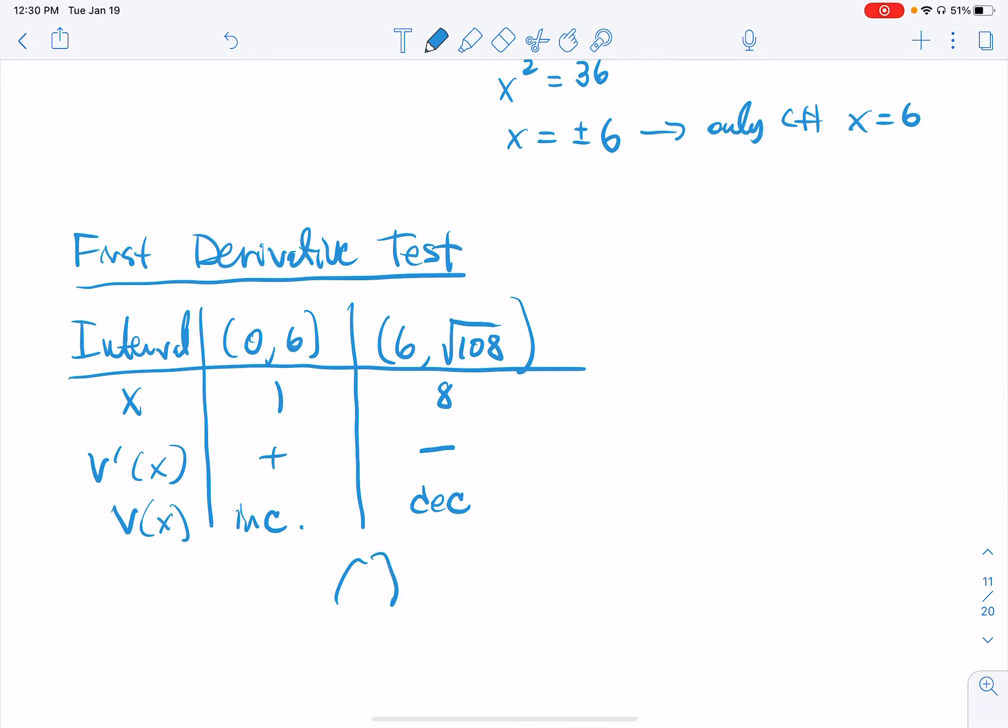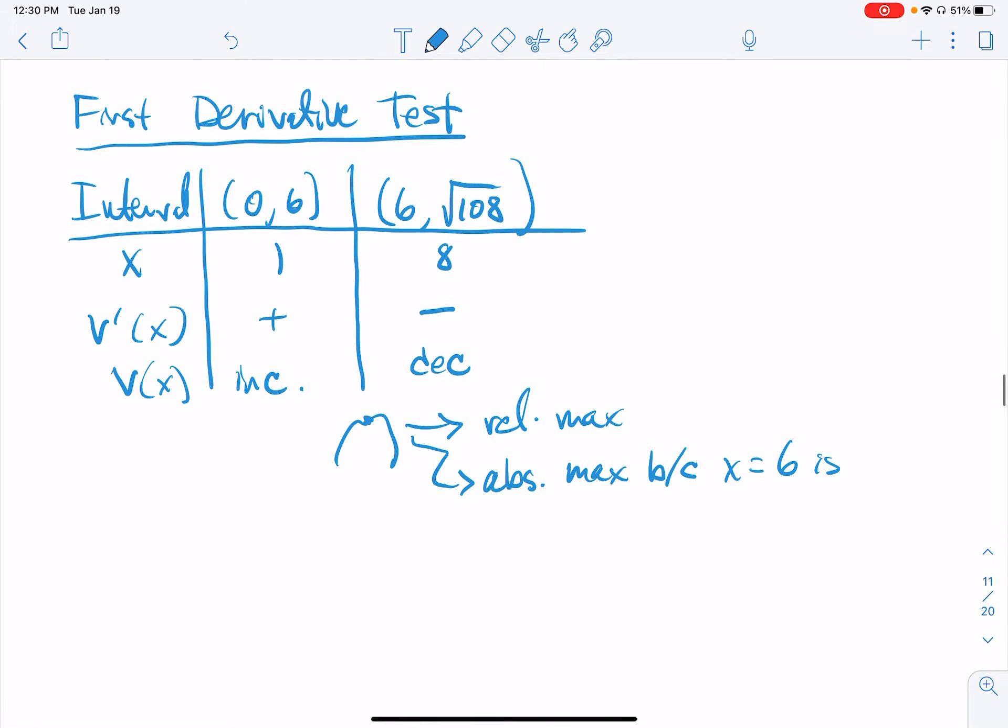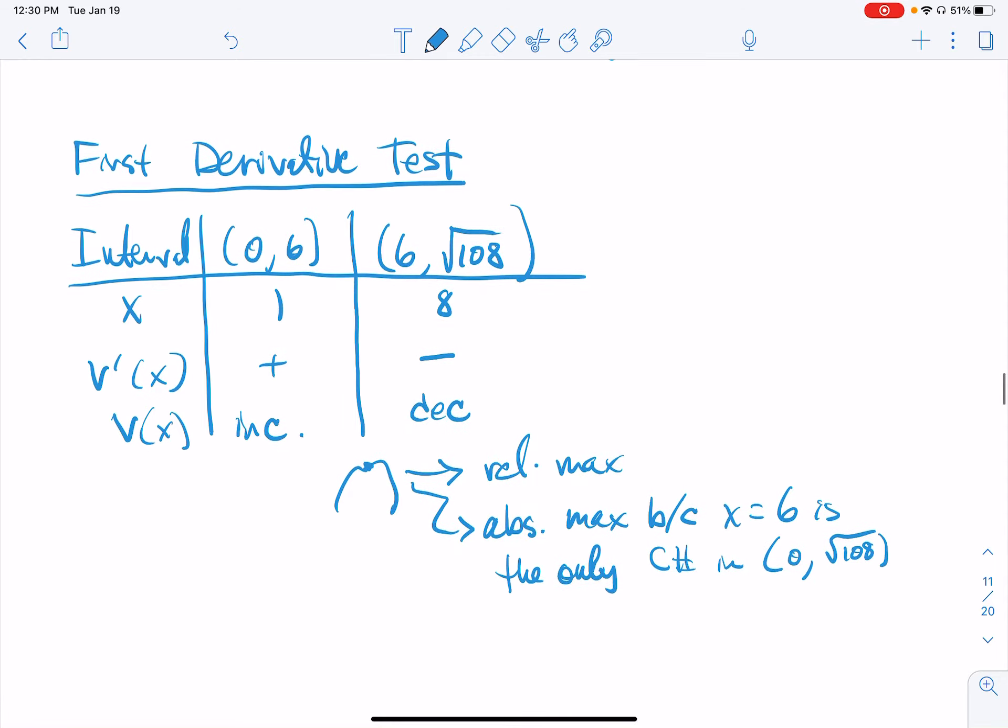Increasing to decreasing. You have found yourself a relative maximum point here. But we can justify this as the absolute max because x equals 6 is the only critical number in our interval from 0 to the square root of 108. All right.